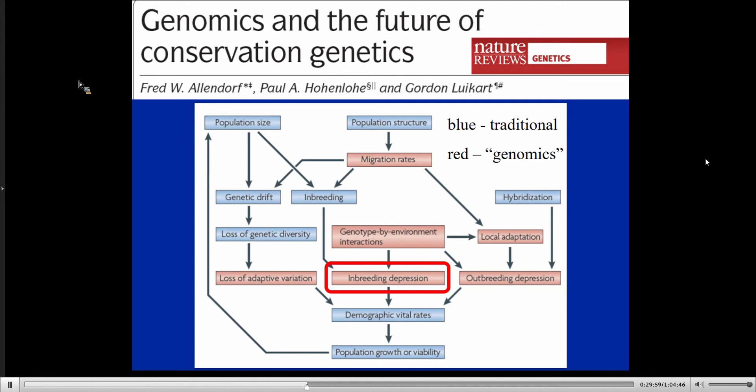One of the most exciting areas where genomics can inform conservation is inbreeding depression. These red boxes on the slide represent areas where we thought we couldn't do before with genetics but we can now do with genomics — including adaptive variation, outbreeding depression, local adaptation, and inbreeding depression. The next part of my talk is going to be about inbreeding depression.